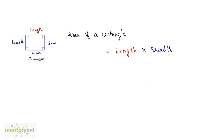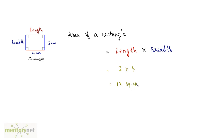Let us move on to a rectangle. The area of a rectangle is just the product of its length and breadth. So the area of this rectangle will be 3 times 4, which is 12 square centimeters.